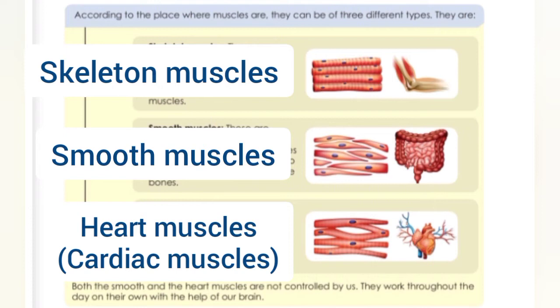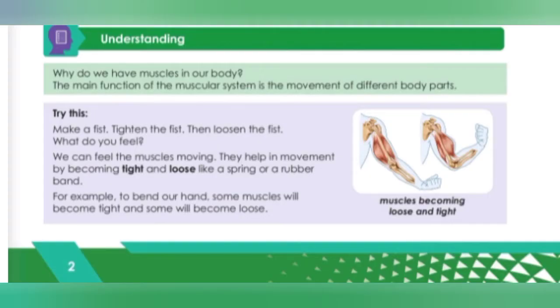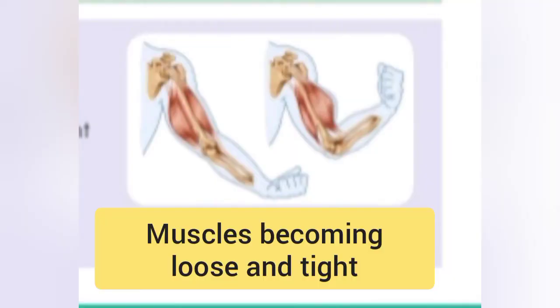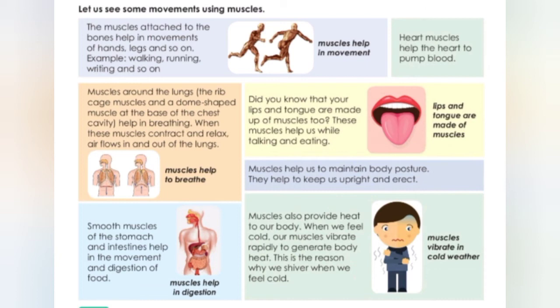Now let us perform another activity to develop a better understanding. Make a fist, tighten it, then loosen the fist. What do you feel? You can now feel muscle movement — muscles become tight and loose like a spring. For example, to bend your hand, some muscles will become tight and some will become loose.